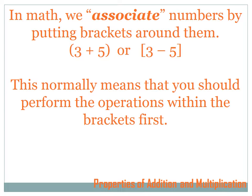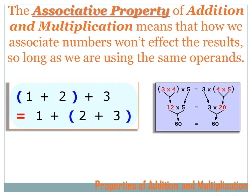This normally means that you should perform the operations within the brackets first. The associative property of addition and multiplication means that how we associate numbers within an addition or multiplication problem won't affect the results, so long as we are using the same operands. For instance, with 1 plus 2 in brackets, adding that to 3: 1 plus 2 equals 3, plus 3 equals 6. Now let's move the brackets around the 2 and the 3 instead. Now I've got 1 plus the expression 2 plus 3. 2 plus 3 is 5, and 1 plus 5 equals 6 — the same result. It works for multiplication as well.